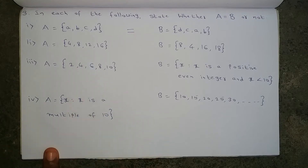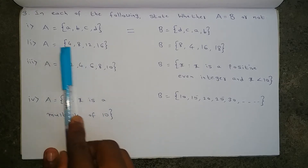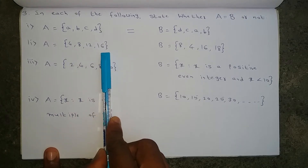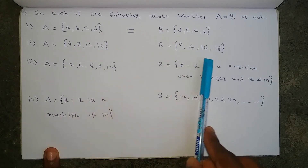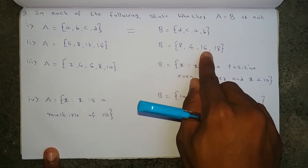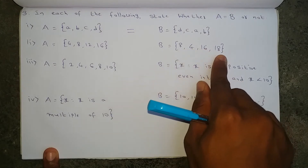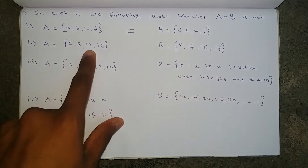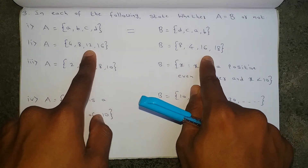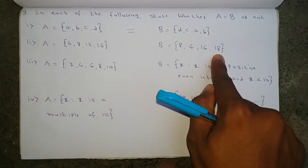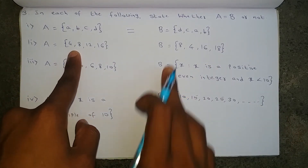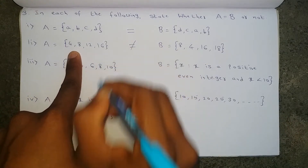Next, for the second one: set A has {4, 8, 12, 16} — four elements. Set B has {4, 8, 16, 18}. In set A, the number 12 is there but in set B, 12 is not there. In set B, 18 is there but in set A, 18 is not there. So these two sets are not equal.